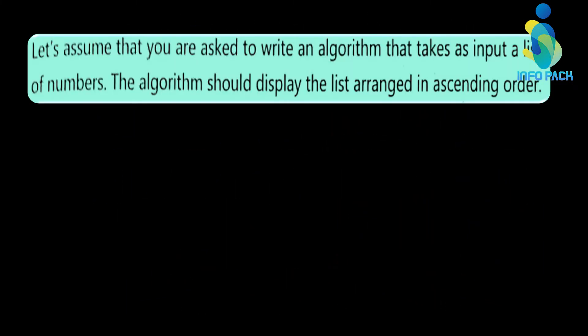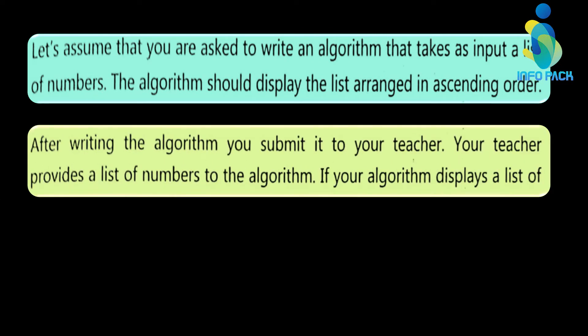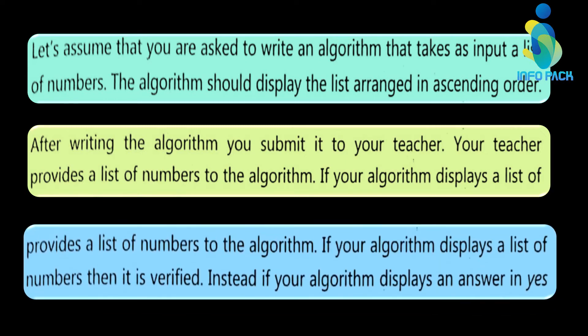Let's look at another example. You are asked to write an algorithm that takes a list of numbers from the user and displays them in ascending order. After writing the algorithm, you submit it to your teacher. The teacher provides different numbers to the algorithm to check it. If the algorithm displays a list of numbers in output, it is verified.